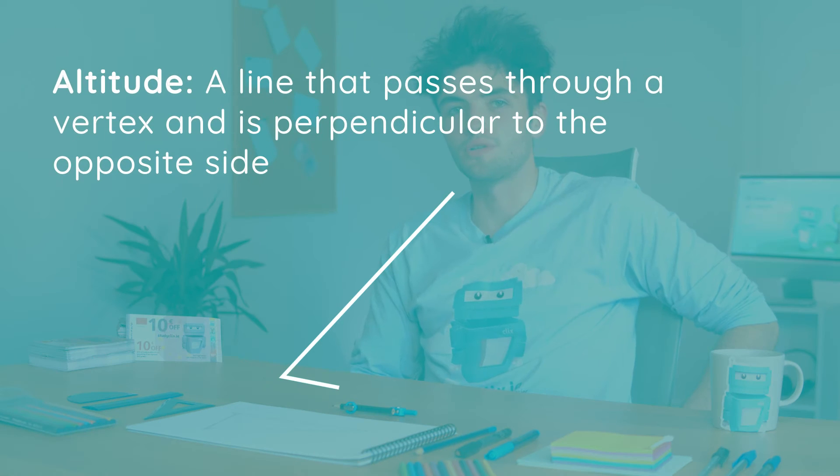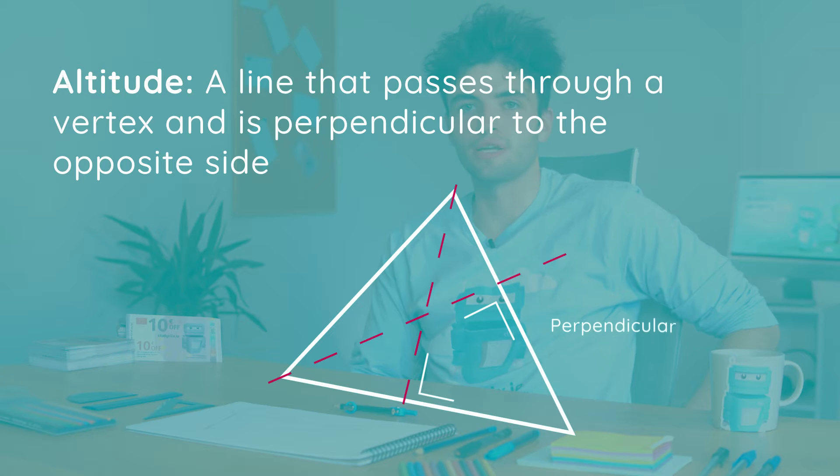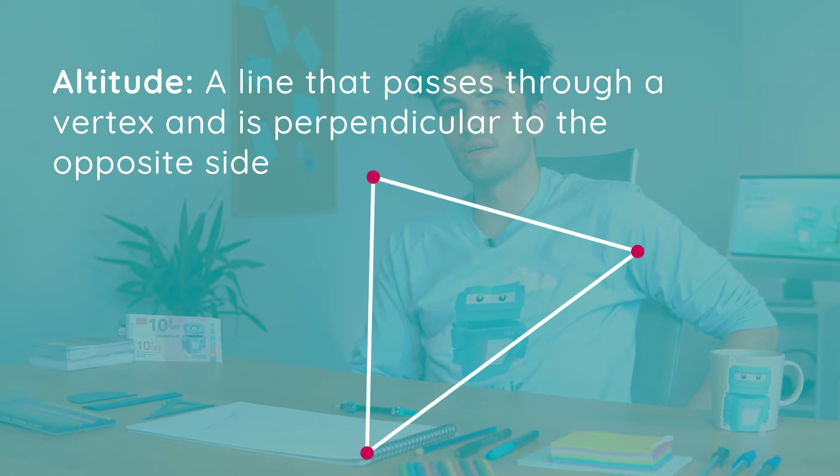So just in case you forgot what an altitude is, an altitude is simply a line which passes through a vertex and is perpendicular to the opposite side. So let's get into it.